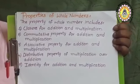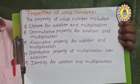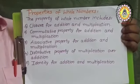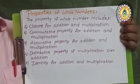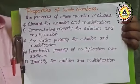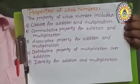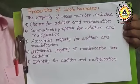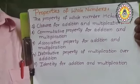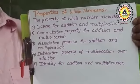Properties of whole numbers: closure property, commutative property, associative property, identity, and distributive property — under the 4 fundamental operations. However, whole numbers only satisfy addition and multiplication under closure, commutative, associative, identity, and distributive properties.